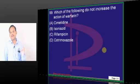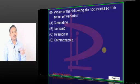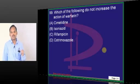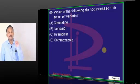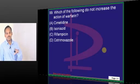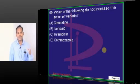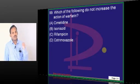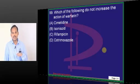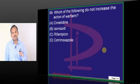Warfarin is only an in vivo acting agent — it has no in vitro action. Warfarin is metabolized by CYP2C9. Any drug which induces CYP2C9 will accelerate metabolism of warfarin, and any drug that inhibits CYP2C9 will inhibit the metabolism of warfarin, therefore raising the level of warfarin.